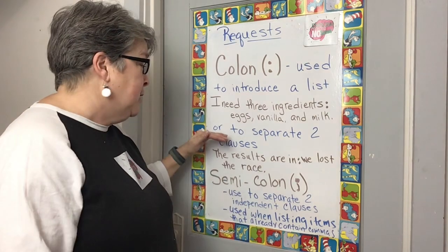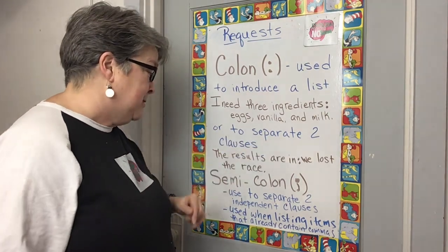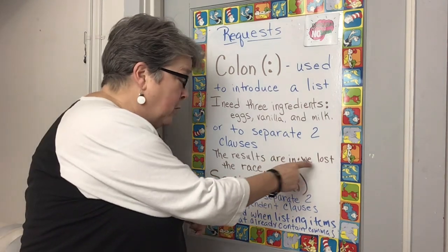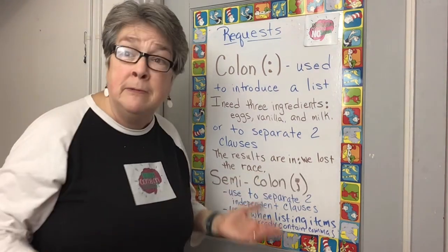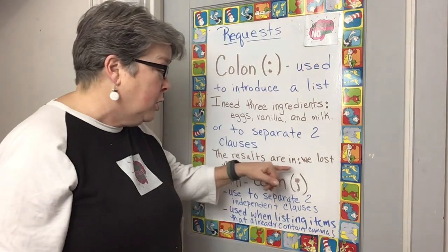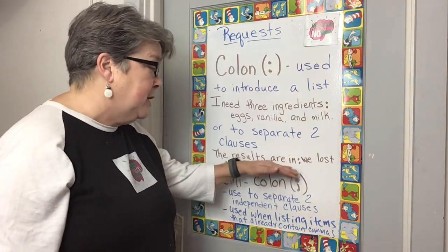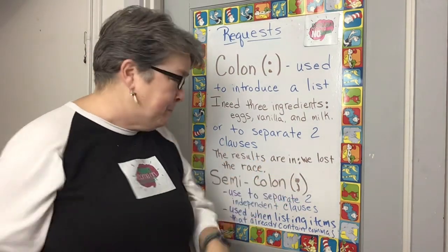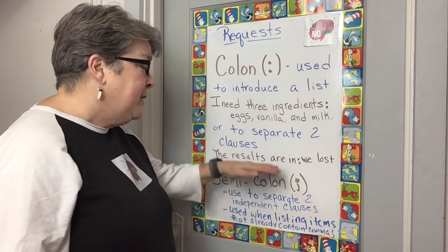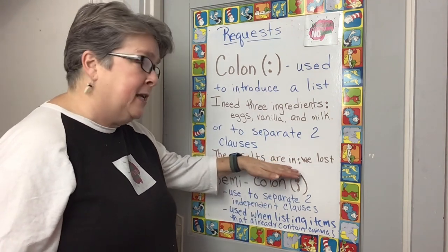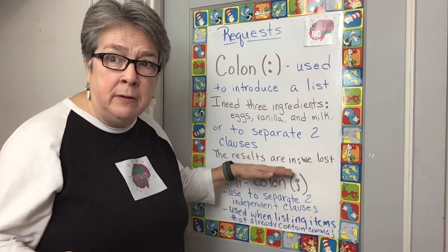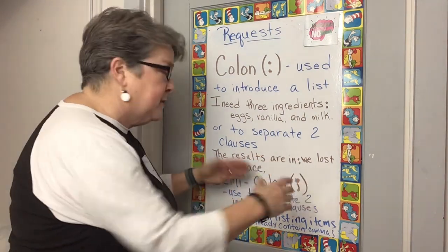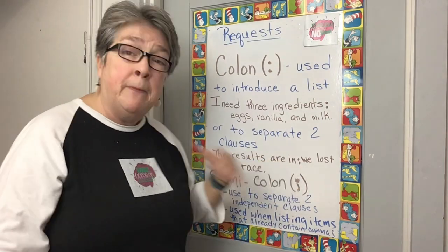It can also be used to separate two clauses. The results are in — that's one clause. Colon. We lost the race — the other independent clause. We bring them together with a colon: the results are in, we lost the race. Oh no, we lost the race! We wouldn't leave the first clause alone as it's not independent on its own — we've got to join it together with 'we lost the race.' So we have two clauses joined together with the colon. Perfect.